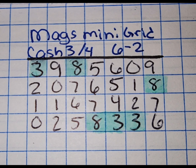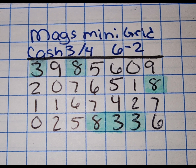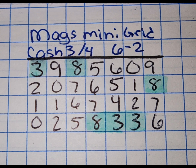Hey y'all, it's Magnolia Money, and this is the Mags Mini Grid for the day that you see listed here on the screen. This is going to be for Cash 3, Cash 4, PIC 3, and PIC 4 style games.